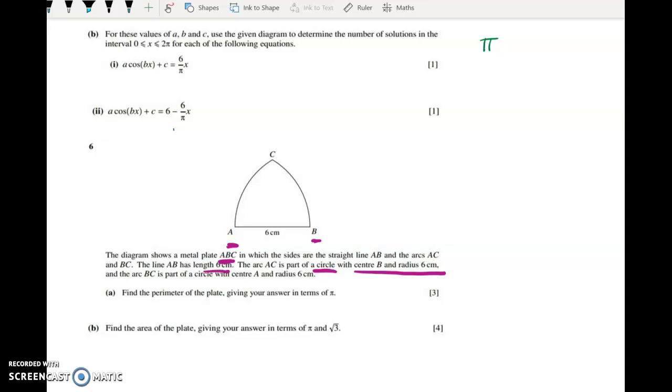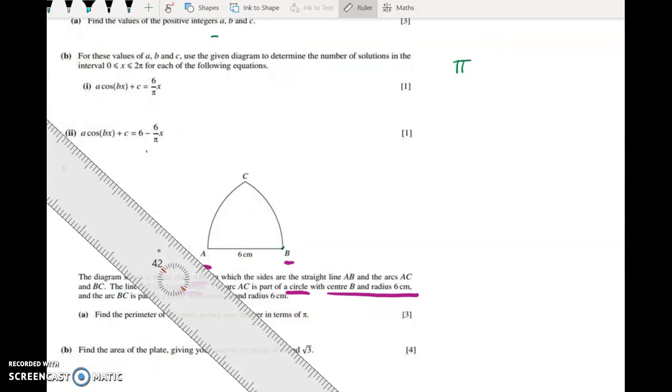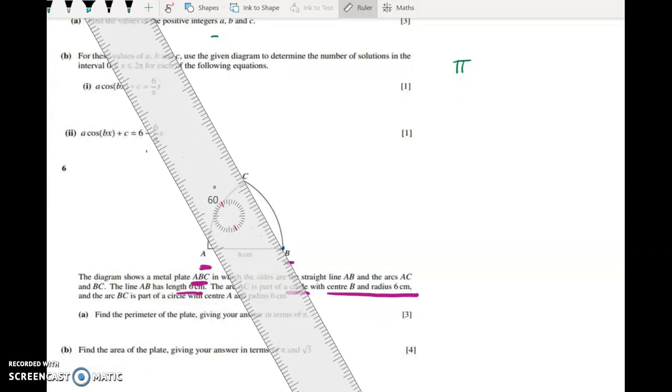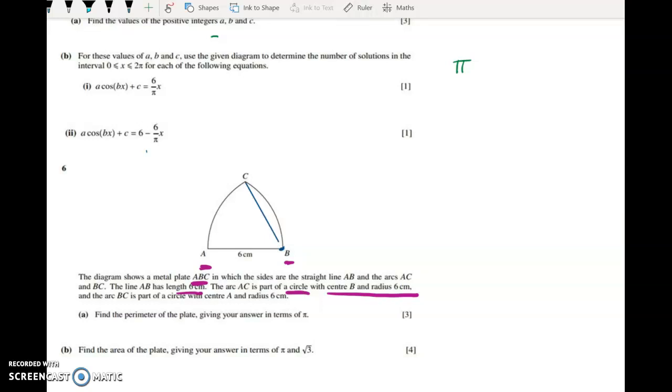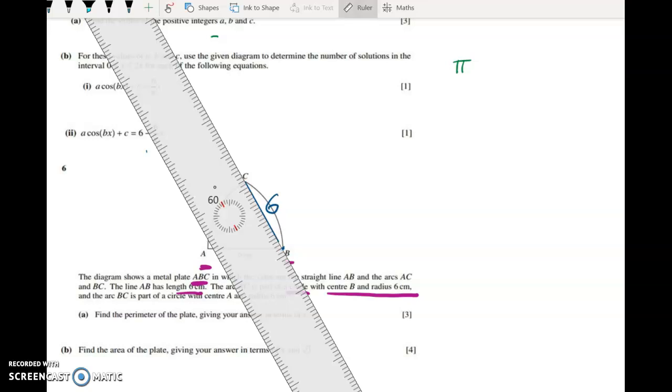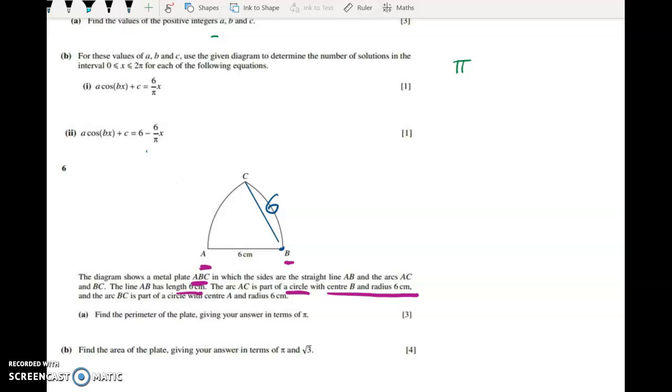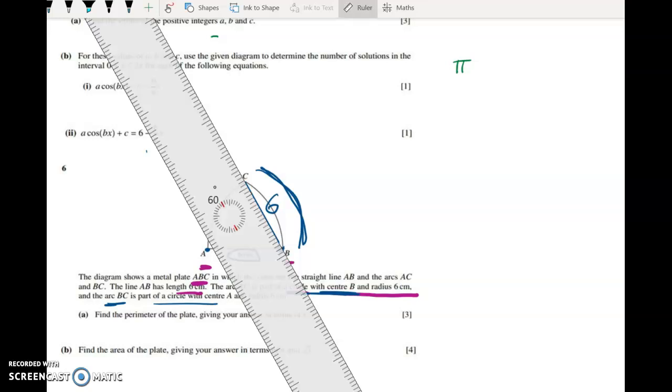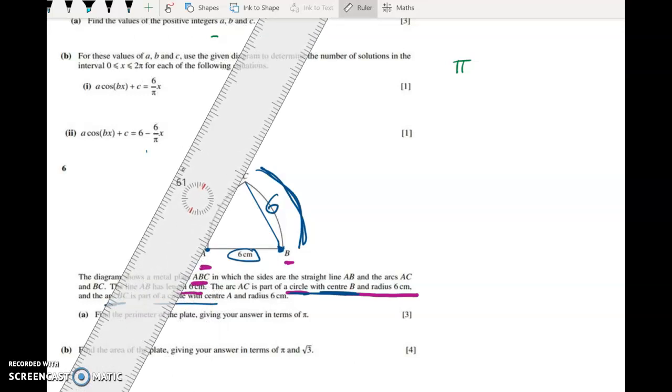The arc AC is part of a circle with centre at B and radius of six centimeters. So we can start to draw some things in. If like me, you have a bit of trouble visualizing it. The centre is at B, and AC is on a circle with the centre at B. So that is very useful because it means we've got a radius of six and the same thing over here.